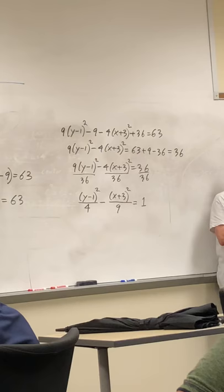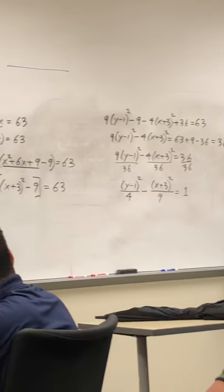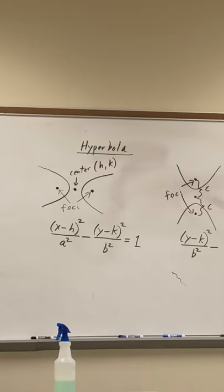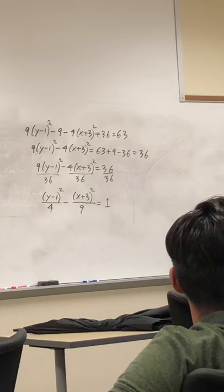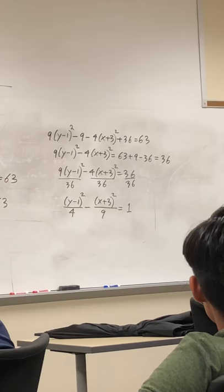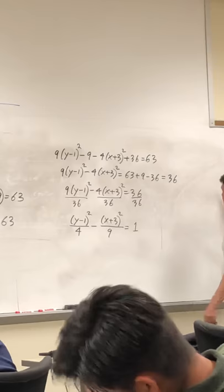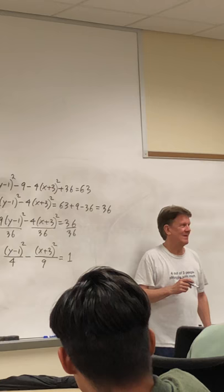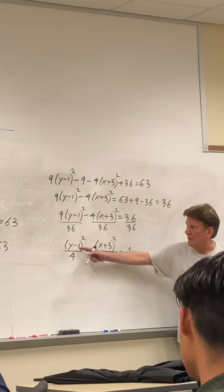Everybody okay with that? Do you want to find the foci? Joey, do you want me to do it? Yes. The center of this thing is going to be negative 3 and 1. Negative 3 and 1. X is negative 3, Y is 1, the center of here.